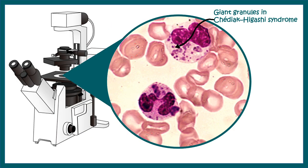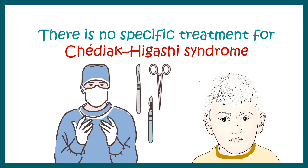The distinguishing histological feature of Chediak-Higashi syndrome is the presence of giant granules in granulocytes, as seen in the associated image. These are granules which cannot fuse together properly.